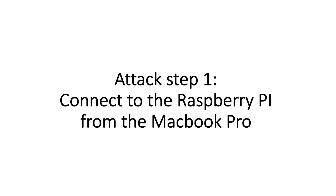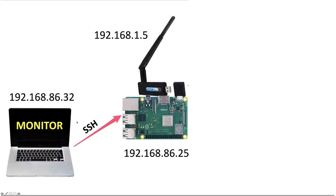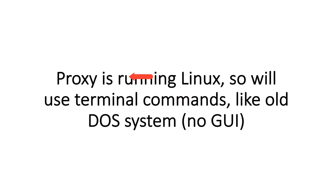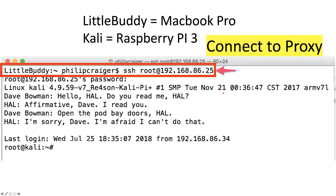The first step is to connect to the Raspberry Pi from the MacBook Pro over a protocol called SSH — Secure Shell — which is an encrypted protocol. The proxy is running a version of Linux, so we have to use terminal commands; there is no GUI on the proxy. Here we have the MacBook Pro connecting to Kali, which is a version of Linux running on the Raspberry Pi.